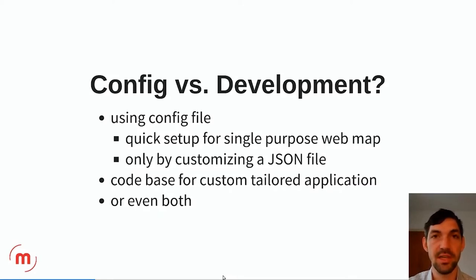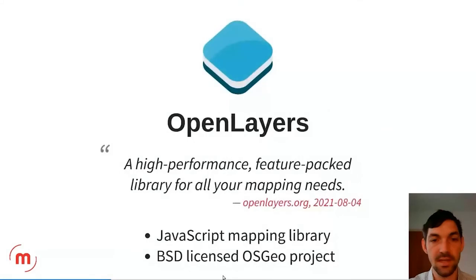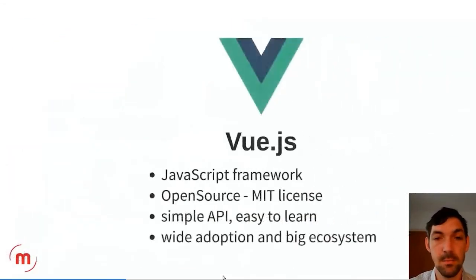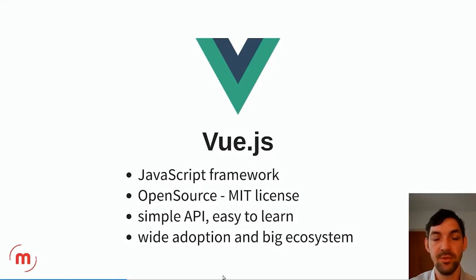The foundation of WECU uses OpenLayers for map rendering, which is a very established library for displaying all kinds of geodata in the browser. Vue.js is a web framework — currently one of the most used alongside React.js and Angular. Vue.js is a bit younger but has a really wide adoption, a very big ecosystem, and is known to be simpler to learn. For the user interface we use Vuetify, which is a component framework for Vue.js.